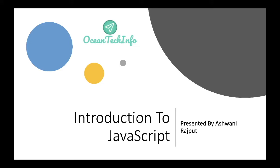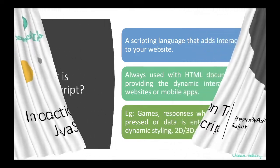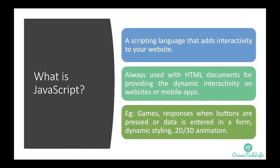First of all we need to understand what JavaScript exactly is. JavaScript is a scripting language or programming language that adds interactivity to your website and is always used with the HTML document for providing dynamic interactivity on your website or mobile apps. For example, it is used to develop gaming applications, to provide responses when buttons are pressed or data is entered in a form, to provide dynamic styling on web pages, and to provide 2D and 3D animations on web pages.